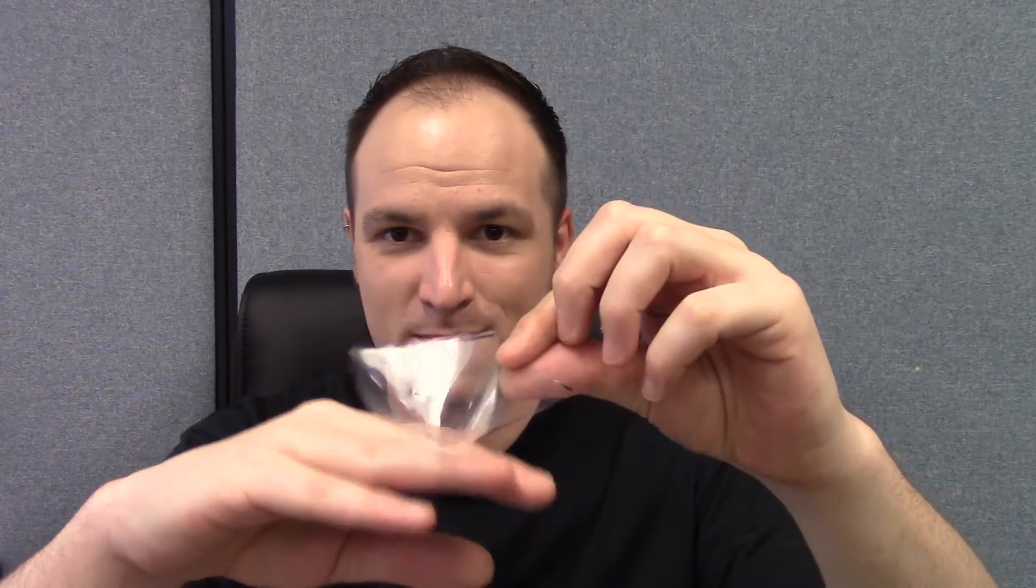First of all, Saran Wrap is not going to work, it cannot keep its shape. I also tried comic book protector plastic and unfortunately it's just way too flimsy. The static from this material sticks to the phone and it won't stay upright. So comic book protector plastic will not work or anything like comic book protector plastic will not work.